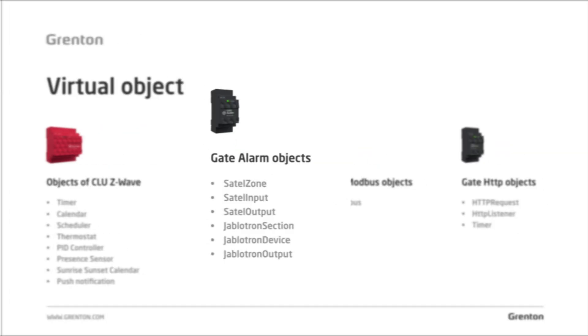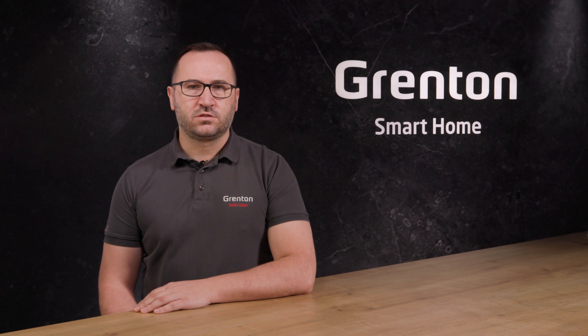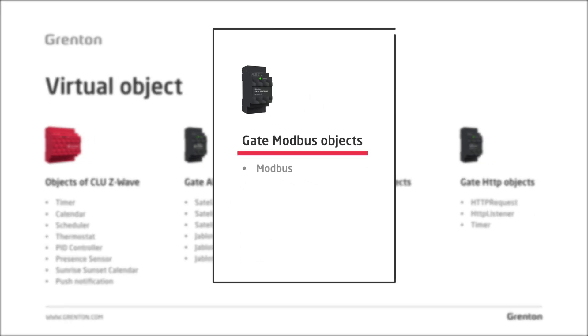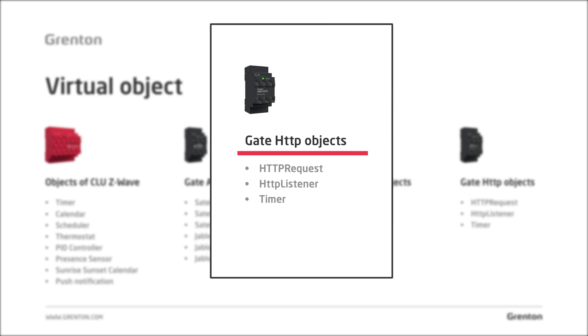Gate-type modules, which are also CLU class objects, also have their own virtual objects on the basis of which we will create the configuration in these devices. For example, a gate alarm will have virtual objects corresponding to the management of the zone in the alarm system for its input or output. Depending on whether it is a Yablotron system or a Satel system, you will see different objects there. In the Modbus module, you will find a virtual object to handle Modbus registers, while in the Gate HTTP module, you will find objects for sending requests or responding to receiving requests.